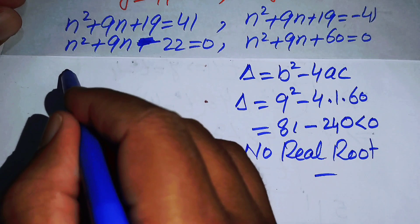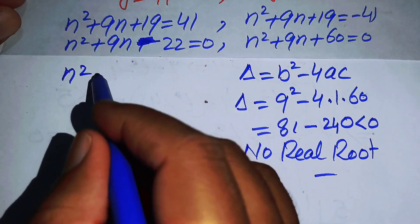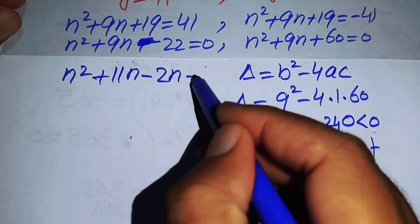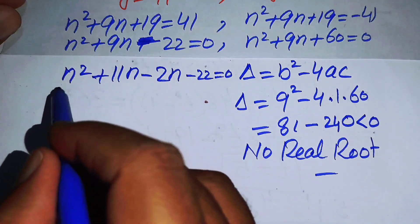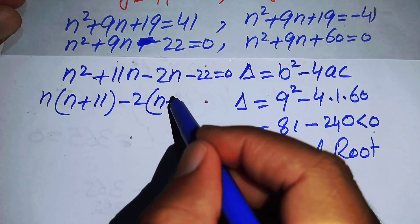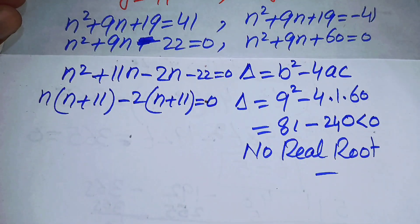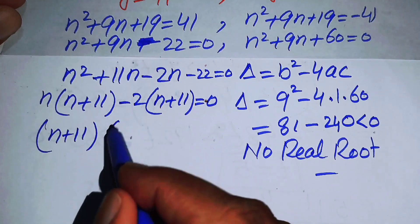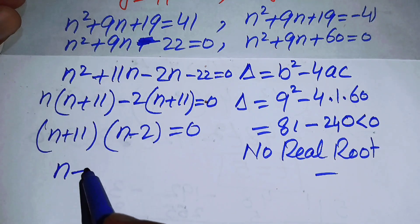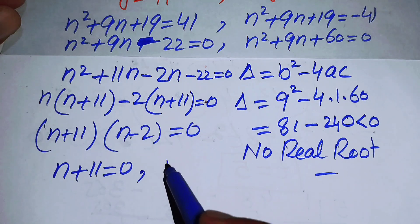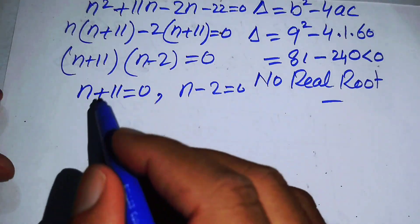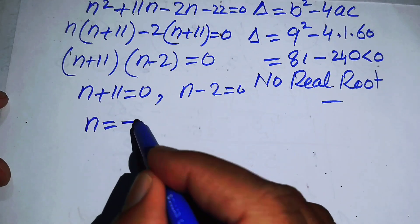We proceed with n²+9n−22 = 0. Factoring, we write it as n²+11n−2n−22 = 0. Taking common factors: n(n+11)−2(n+11) = 0, so (n+11)(n−2) = 0. This gives n+11 = 0 or n−2 = 0.